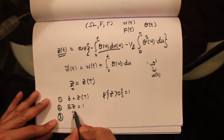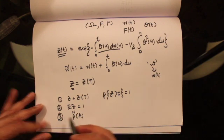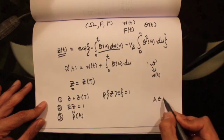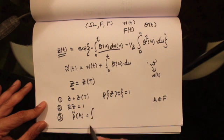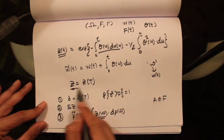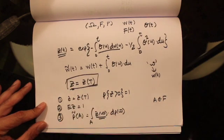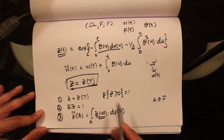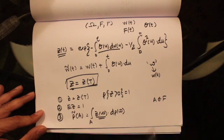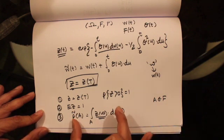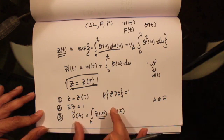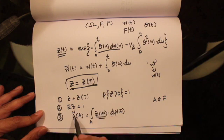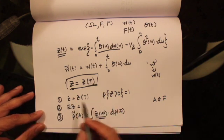Finally, we constructed a new probability measure P-tilde. This probability measure assigns each set in our sigma-algebra a probability given by the formula: the integral of Z(Omega) dP(Omega), where Z(Omega) is nothing but Z(T). Here we write Omega explicitly to point out that the variable Z depends on the outcome of the random experiment — it is a random variable. So when we construct a new probability measure using this formula...